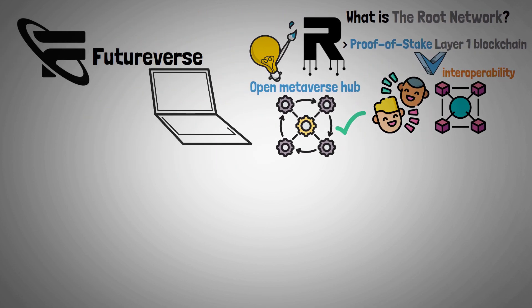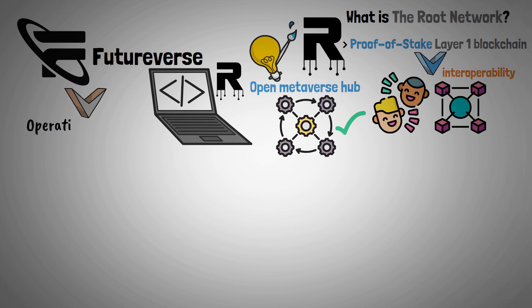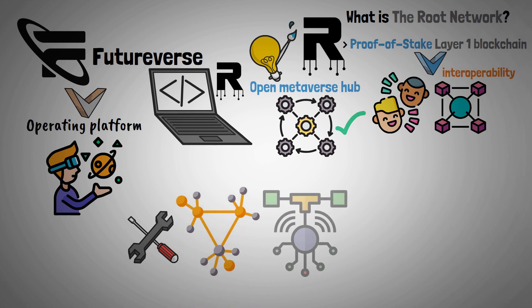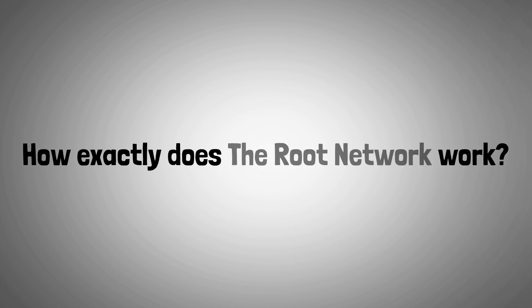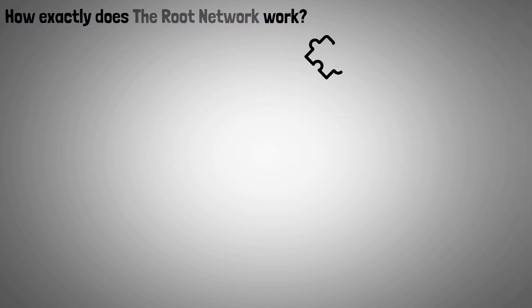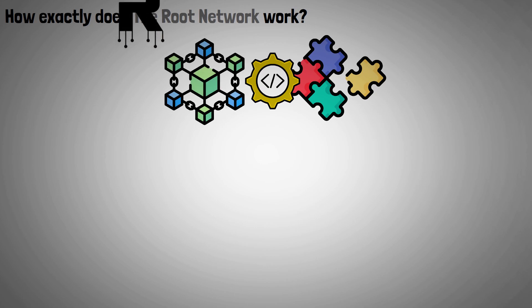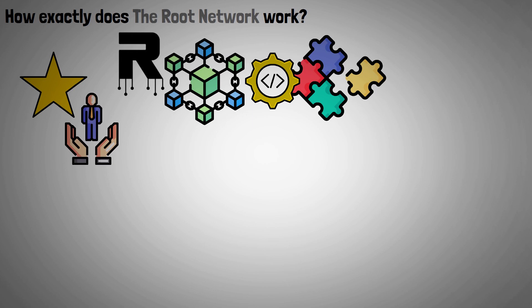Futureverse is responsible for developing the Root Network, and it is an operating platform for the Metaverse, made up of a number of decentralized infrastructures and protocols. Now let's examine how exactly the Root Network works. The best Web3 components make up the core blockchain infrastructure of the Root Network, with the purpose of improved user onboarding.